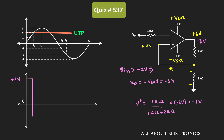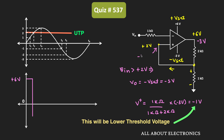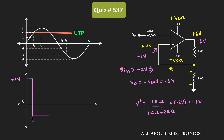With Vout = -3V and V+ = -1V, V- remains greater than V+ as long as the input signal stays above -1V. Therefore, Vout remains at -3V. Looking at the input waveform, up to time point t4 the input is greater than -1V, so the output stays at -3V up to t4.